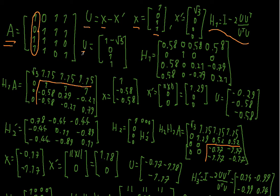Now I have my vector u, so I can plug everything into the formula and get the following Householder matrix. This is a 4×4 matrix because we consider the entire 4×4 matrix A. I then apply it to A and get the following result.